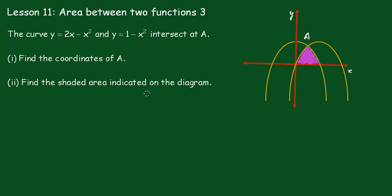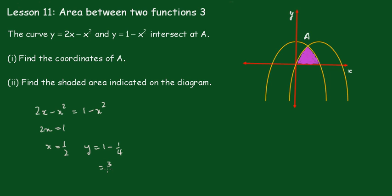We have to find the coordinates of point A, so we solve the two equations simultaneously. Setting 2x minus x squared equal to 1 minus x squared, the x squared terms cancel, giving us 2x equals 1, so x equals one half. Substituting back, y equals 1 minus one quarter, which is three quarters. So the coordinates of A are (1/2, 3/4).